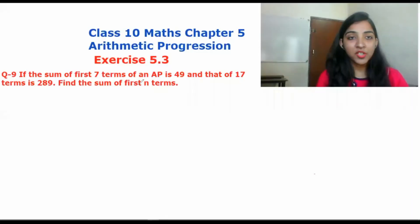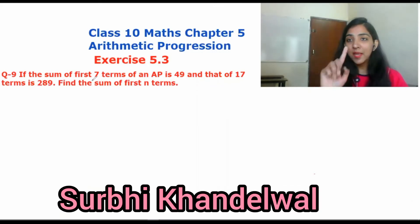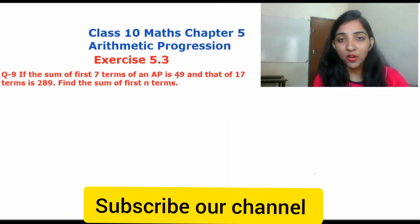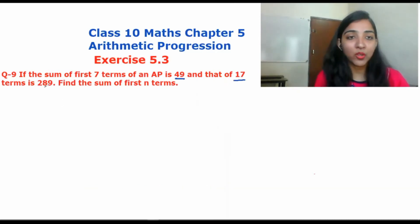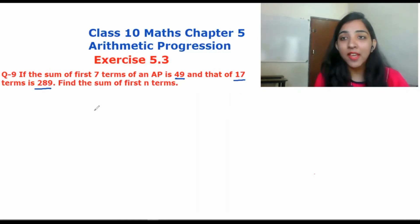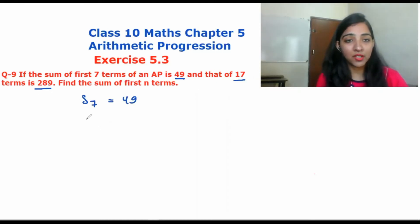So in this question, we have S7 — the sum of the first 7 terms — is 49, and the sum of the first 17 terms, S17, is 289.